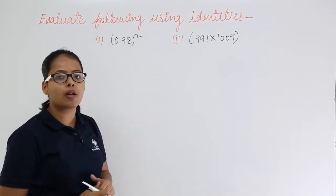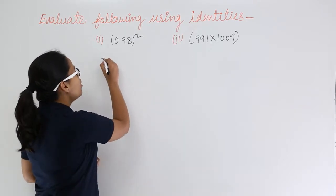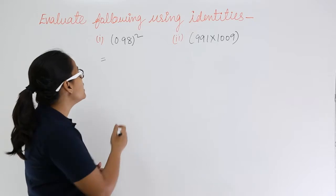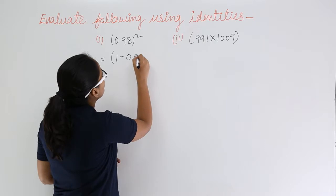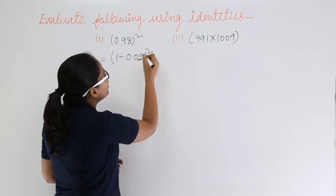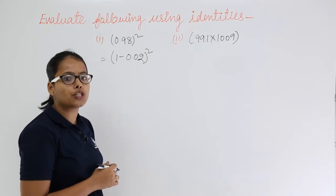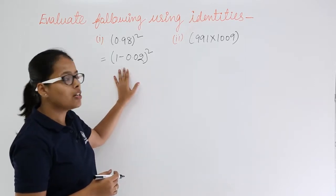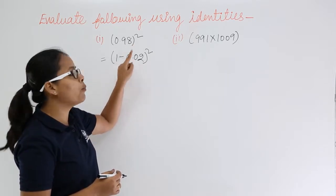So let's take our first problem which is 0.98 whole square. Now to apply the identity here you are going to write this in the form of 1 minus 0.02 whole square so that you can easily calculate the expression for 0.98 whole square. So I have written this in the form of this, when you subtract 0.02 from 1 you will be getting 0.98.